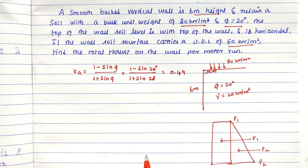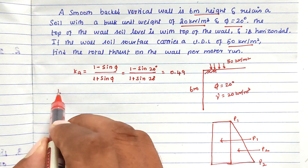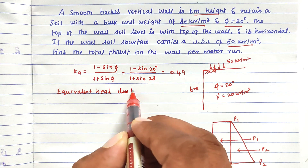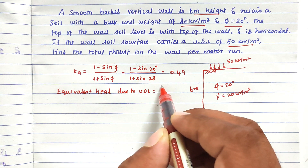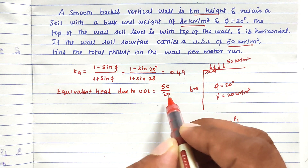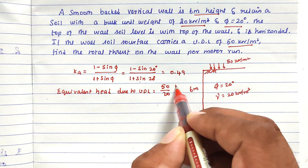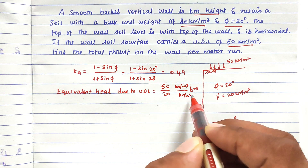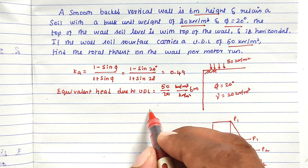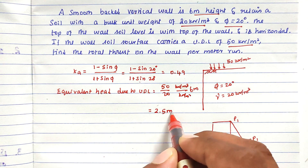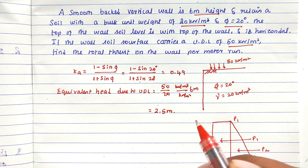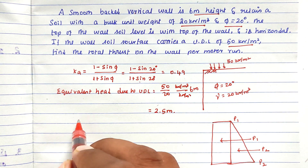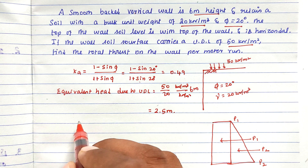Next, we have to find out the equivalent head due to UDL. We take 50 kilo Newton per meter square divided by 20 kilo Newton per meter cube, which gives us a value of 2.5 meters.